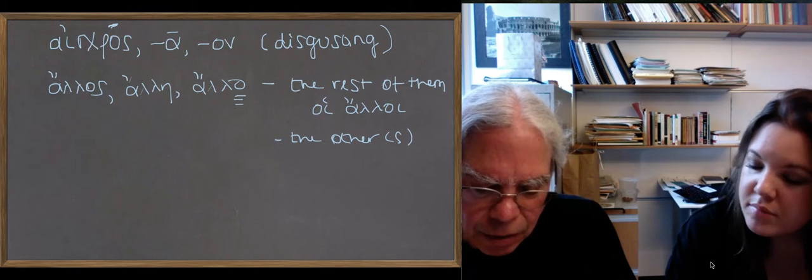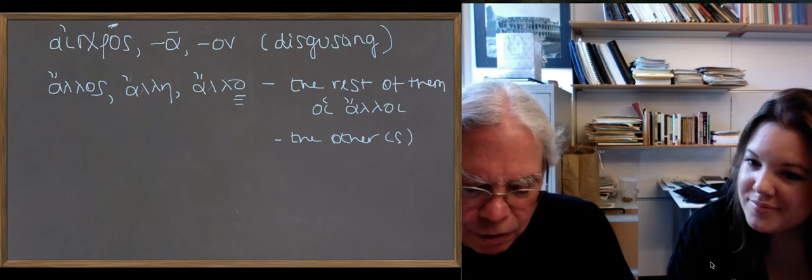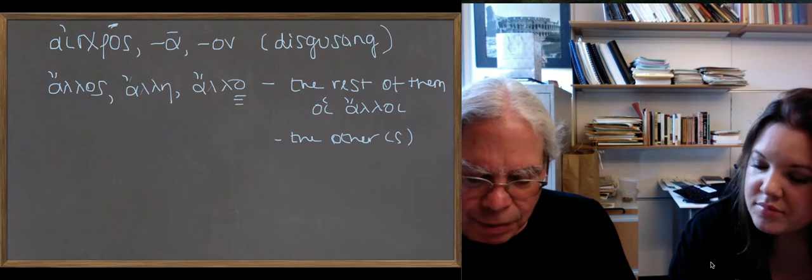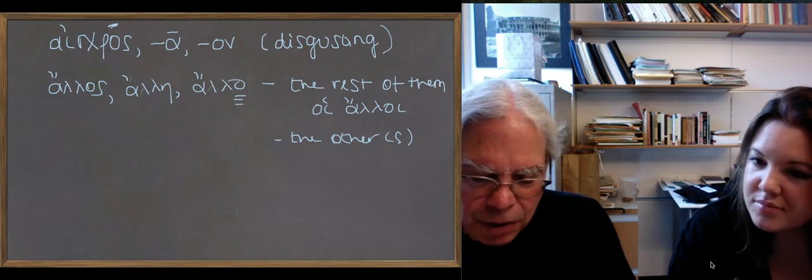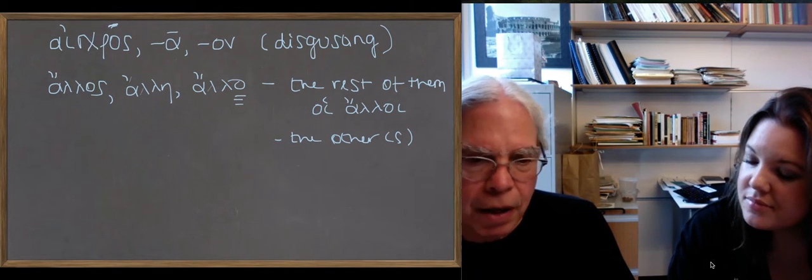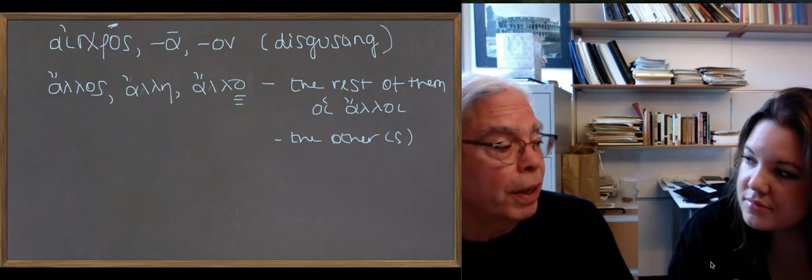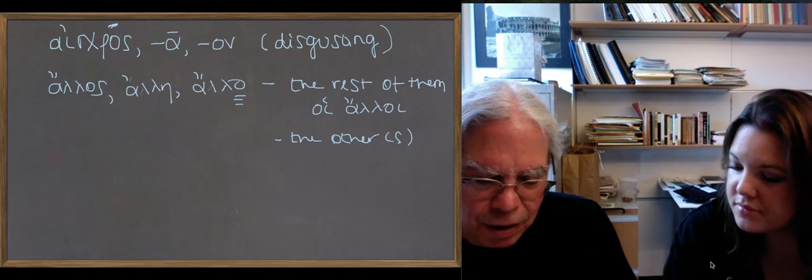We get the noun, gramma. This is the noun, the neuter noun derived from the root grapho to write. With the double mu, gramma, grammatos, from which we've got grammar and all those things. It has some interesting meanings in the plural. In the singular, it means a letter of the alphabet. In the plural, it can mean, ta grammata, can mean the alphabet as a whole. Or letters or documents. Things written in letters.